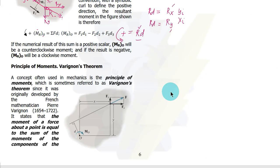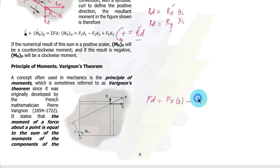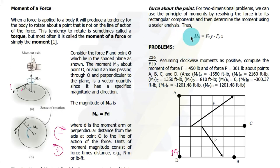Next is Varignon's Theorem. It states that the moment of a force is equal to the sum of the moments of its components. Applied here: the moment about point O, or the origin, equals Fx multiplied by Y minus Fy multiplied by X, assuming clockwise moment is positive. This is equivalent to M = F·d.